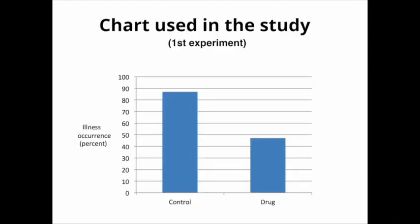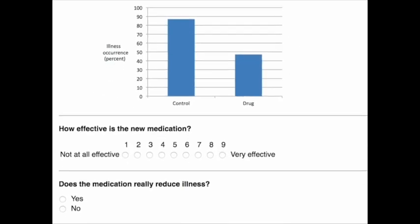So this is the chart used in the first experiment. So it's very simplistic, it's not very beautiful, but there is nothing wrong about it. There is nothing deceptive about it. It shows actual data. The data is from a fictional medical trial testing the efficacy of a new drug for preventing the common cold. So we can see on the left that almost 90% of people who didn't take the drug became sick, whereas among people who took the drug ahead of time, less than 50% became sick. So there is no other information provided, such as sample size or inferential information, but still, this information is very relevant to the questions that were asked, which were, how effective is the new medication, and does the medication really reduce illness?